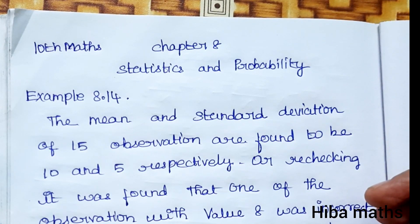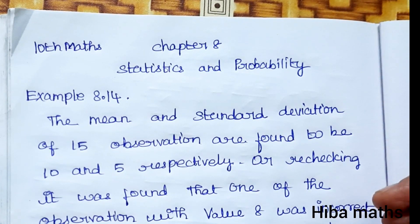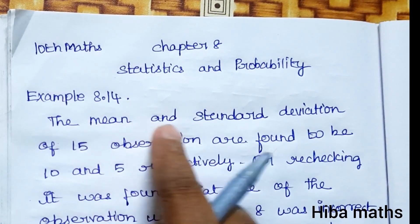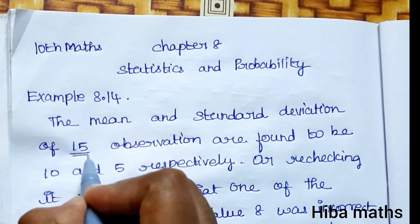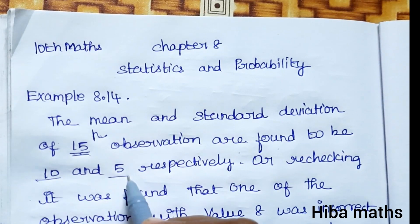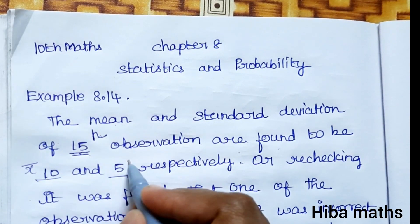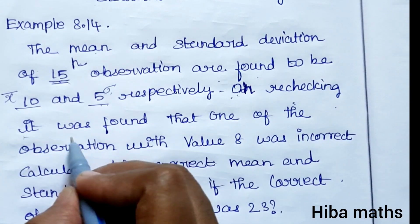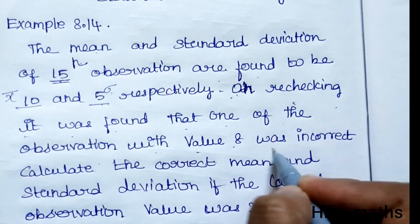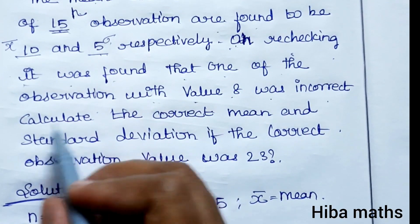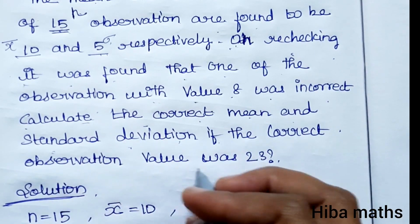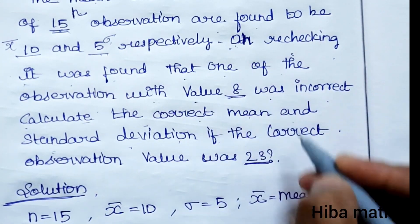Hello students, welcome to NCERT Class 10 standard, Chapter 8: Statistics and Probability, Example 8.14. The mean and standard deviation of 15 observations are found to be 10 and 5 respectively. On rechecking, it was found that one observation with value 8 was incorrect. Calculate the correct mean and standard deviation if the correct observation value was 23.